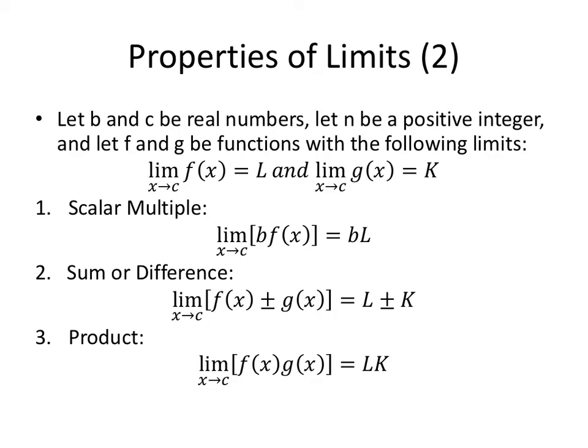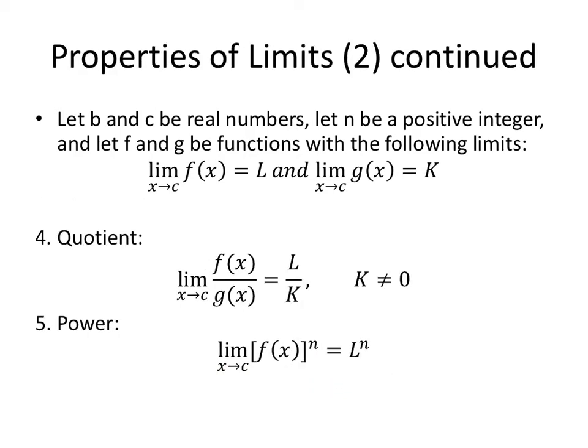Similarly, with the product. The limit of a product is the product of the limits. The limit of a quotient is the quotient of the limits as long as the limit as X approaches C of G of X is not zero. So our K value can't be zero. And if we have a function raised to a power, the limit as X approaches C of F of X raised to the N power is L to the N, whatever the limit is to the N power. So these work nicely. They're like we would want them to work if we had to define them.